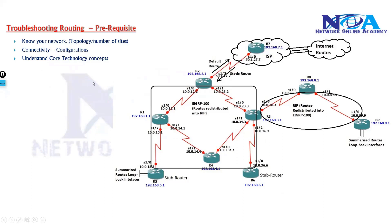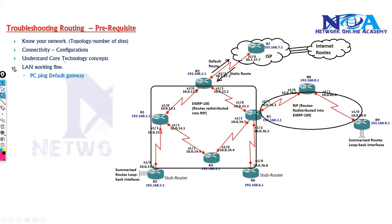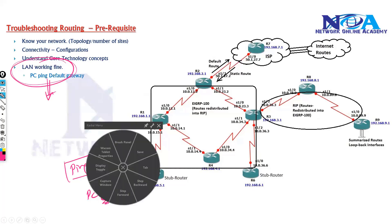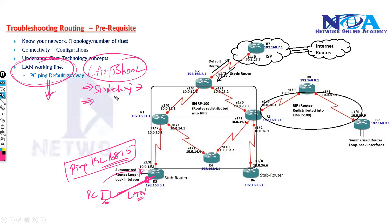Once you understand the core technology concepts, the next step when troubleshooting routing is to confirm that your LAN is fine. From a PC, try pinging the gateway — for example, 192.168.1.5. If you can ping the gateway, it confirms the LAN is okay. We are not jumping into LAN troubleshooting here; we assume the LAN is perfect. If there is a LAN problem, that falls under switching troubleshooting. Here we confirm the LAN is fine so we can proceed to troubleshoot routing.